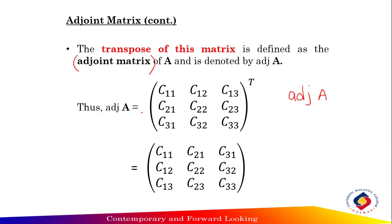So the adjoint of matrix A equals the cofactor matrix C11 through C33 transposed. After transposing, you will get C11, C21, C31 in the first column; C12, C22, C32 in the second column; and C13, C23, C33 in the third column.